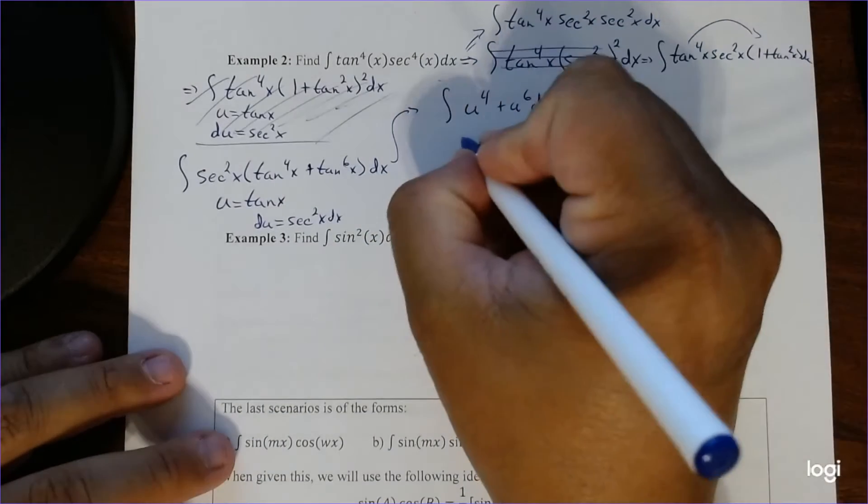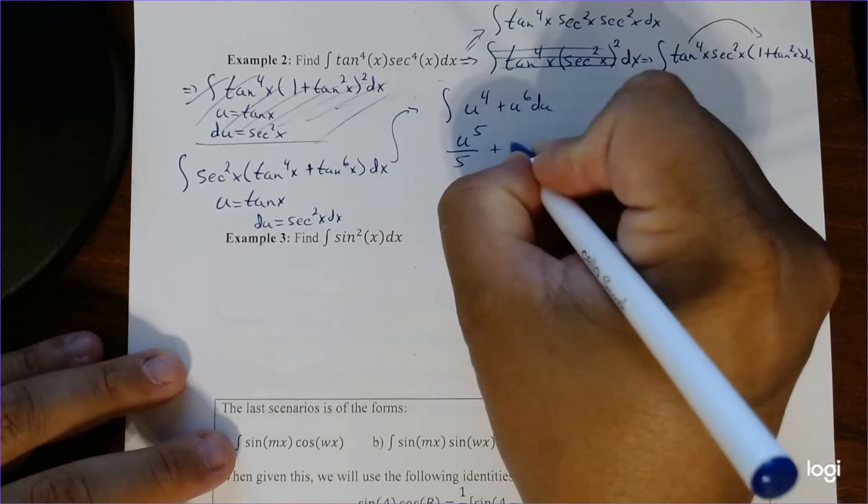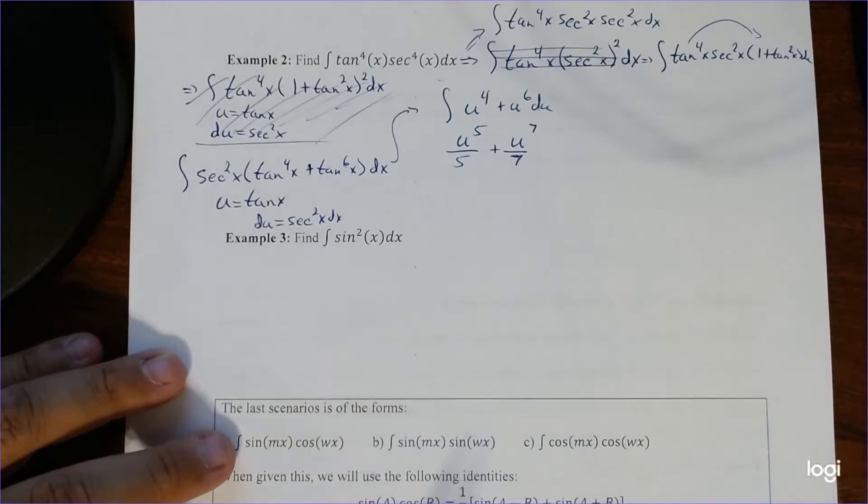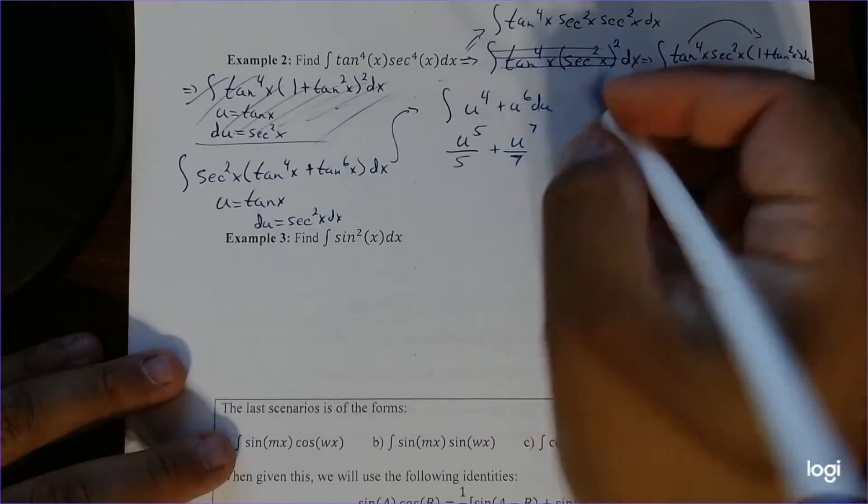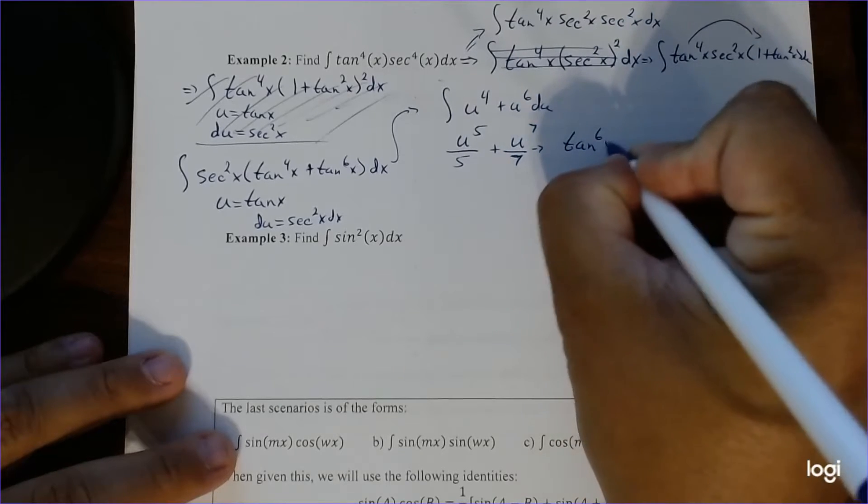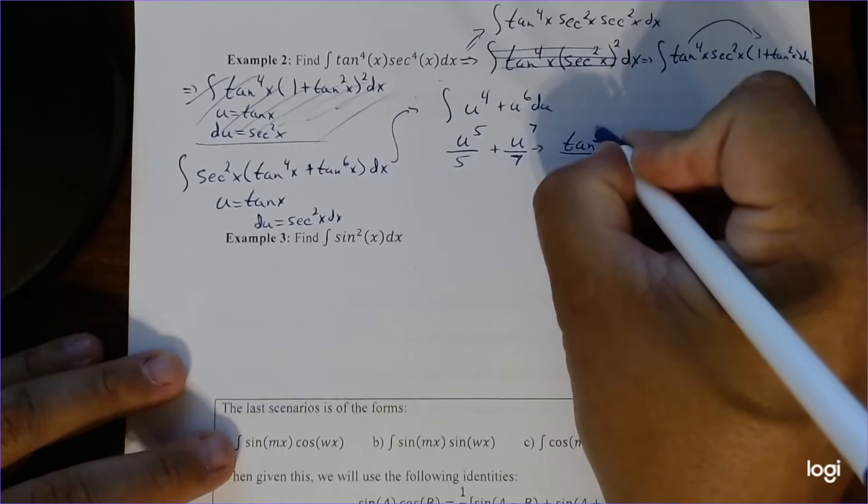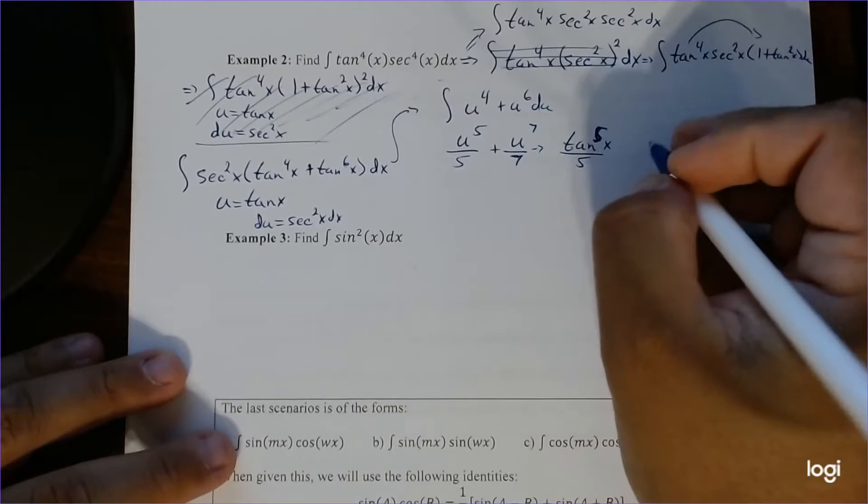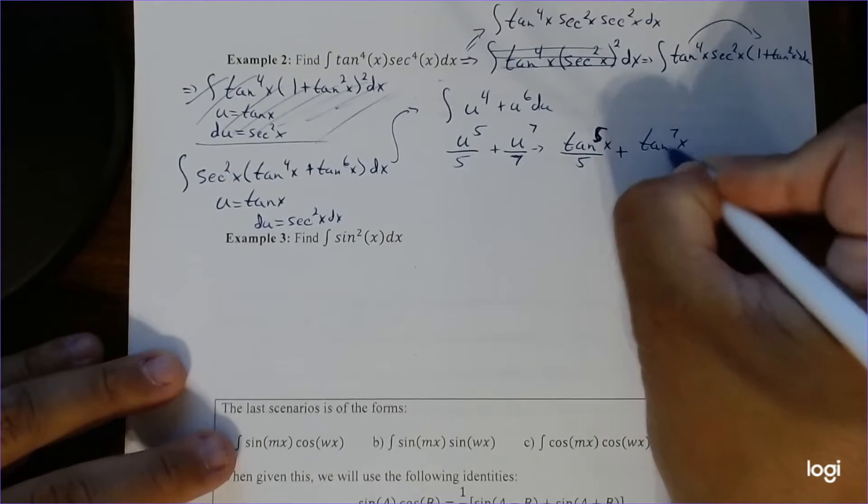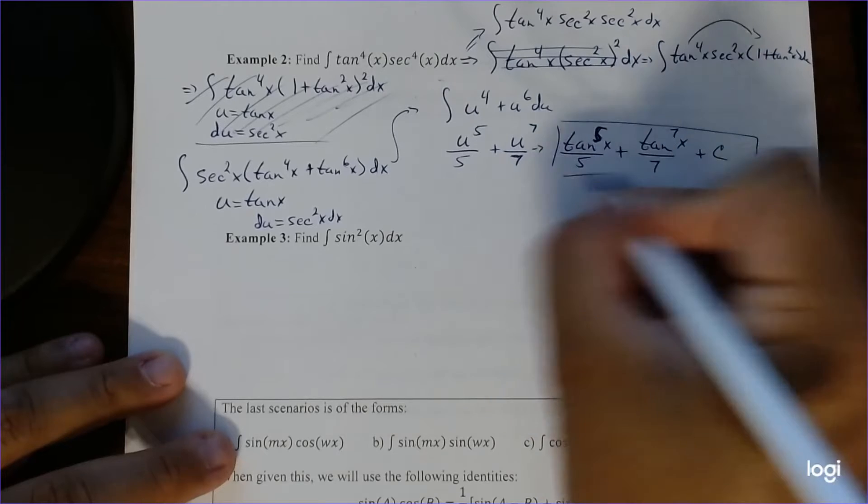So finishing this off, this is going to be u to the 5th and u to the 7th, and then just plug in what u was to begin with. So this is going to be tan to the 5th over 5 plus tan to the 7th over 7 plus c. And there we go.